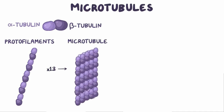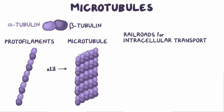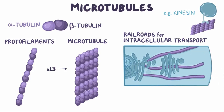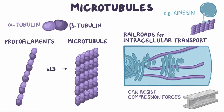Microtubules stretch to and from every corner of the cell, which allows them to be used like railroads for intracellular transport. For example, proteins like kinesin and dynein pick up vesicles full of proteins, lipids, or hormones and carry them on microtubules either to or from the cell membrane to specific organelles, like the Golgi apparatus. Microtubules can also resist a lot of compression force and still maintain their shape, so they're like the steel beams that support and give a building its shape.